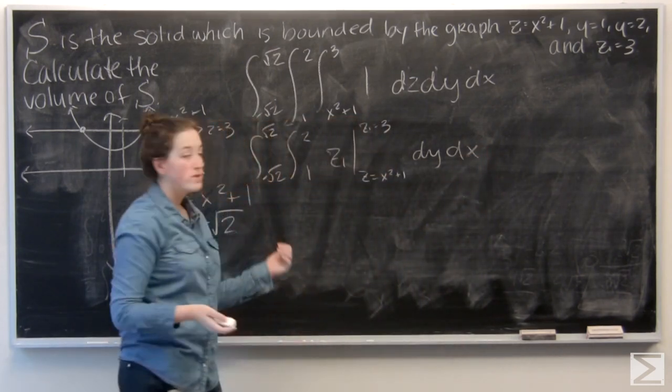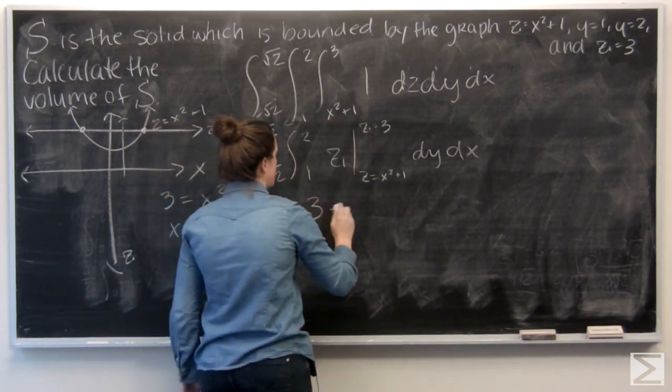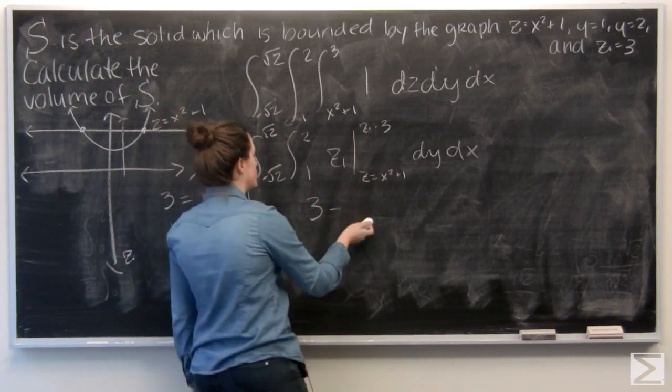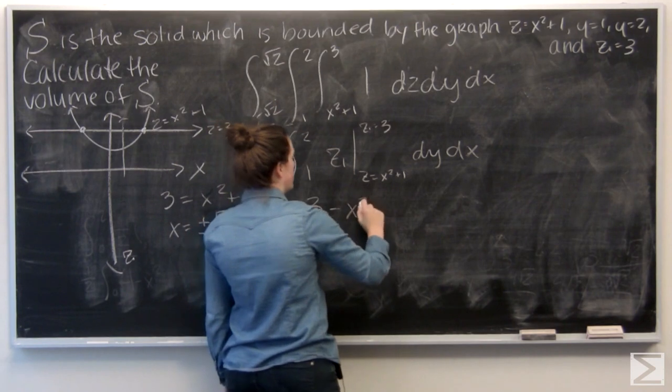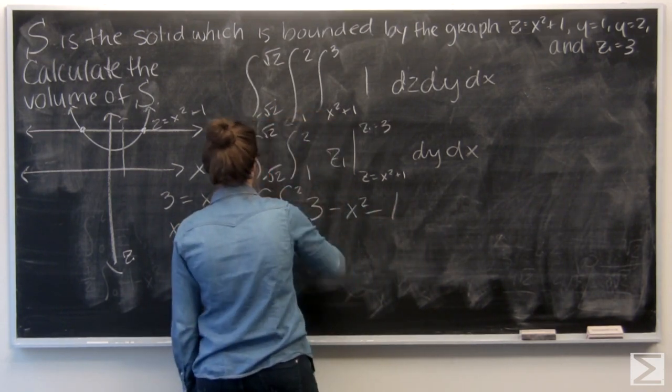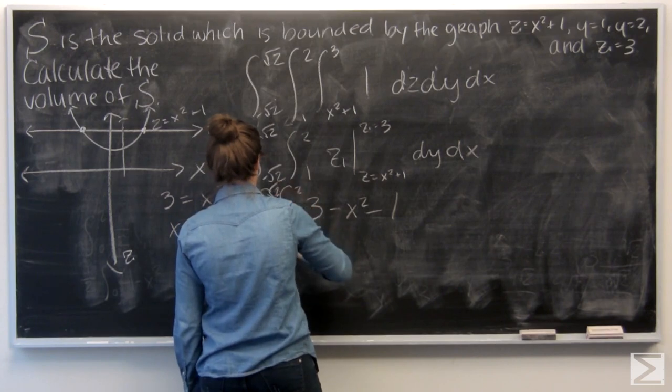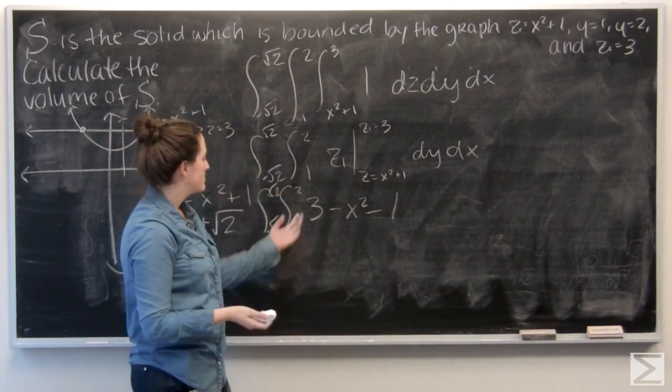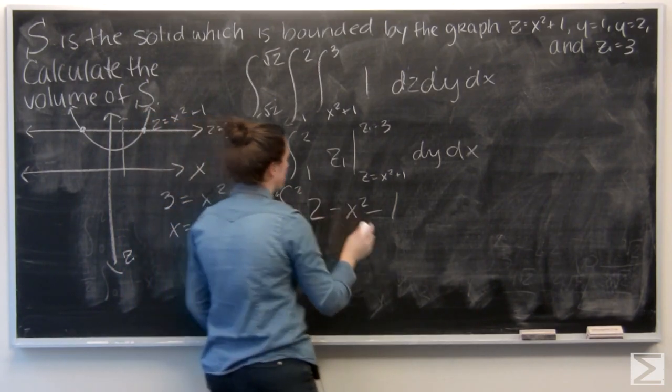So let me go ahead and plug in 3 first for z. And then I want to subtract x squared minus 1. So I'm looking at 3 minus x squared minus 1. Well, 3 minus 1 is 2. Let me go ahead and fix that.